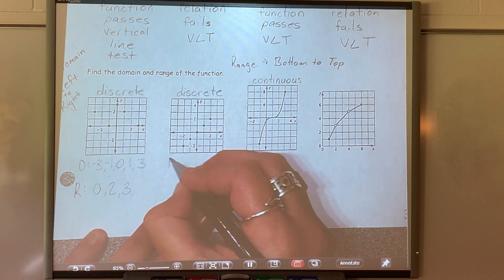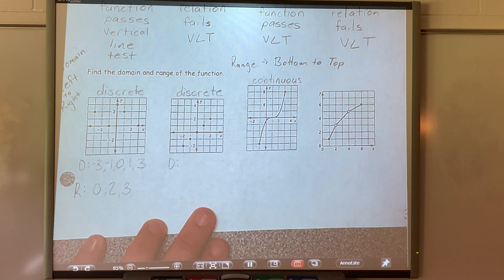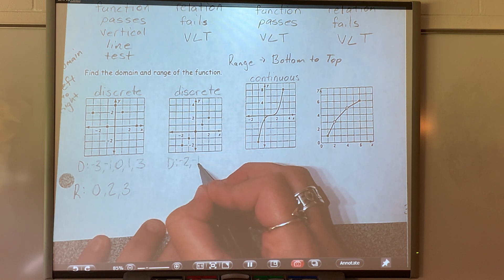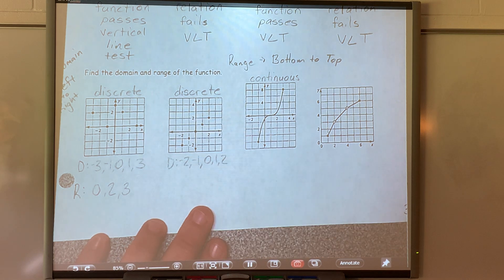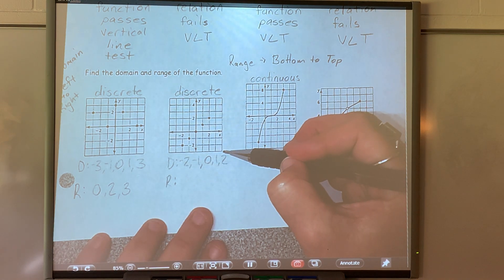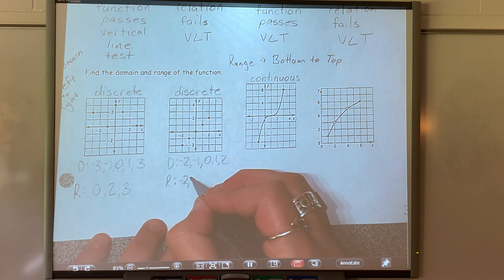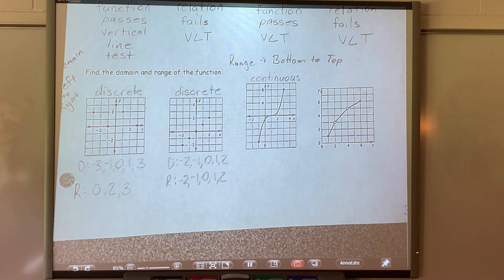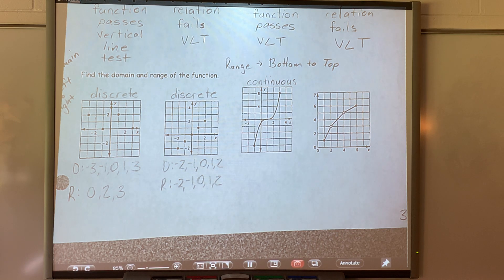If I'm looking at my domain and I know it's discrete, that means I'm going to write individual numbers. If it's continuous, we write it a different way. Starting at the left of my graph, my first x value is negative 2. Then continuing right. For the range — range is my y value — I go down to the very bottom of my graph. The first one is negative 2, then continuing up. The domain and range happen to be the same on this one, though that won't always be the case.